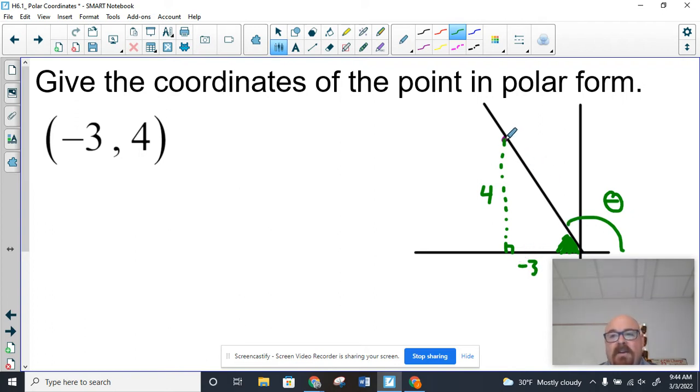And the r value, which is the distance that this point is from the pole, can be found using the Pythagorean theorem. This is a Pythagorean triple. Even though this is negative 3, we know that r is 5. So let's get that out of the way. You could find that doing the Pythagorean theorem, but 3, 4, 5 is a triple.